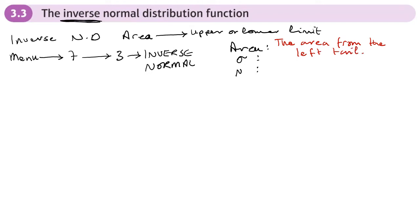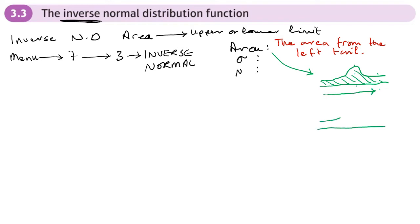If you've got the Casio graphic calculator, you can tell it you want the area from the right tail. But it's really important that your calculator is expecting you to type in the area from the left. So if you have a question where the area is on this side, you'll need to work out the area from the left and type that in. It's always the area from the left tail. If you have the area on the right-hand side, you'll need to do one minus that area to get the area from the left. If you get an incorrect answer, it's probably because you've given the area from the right tail.